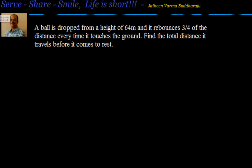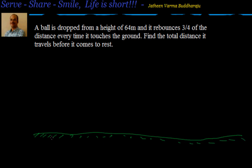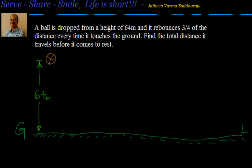Let me draw a diagram. Let's say this is the ground — a plain ground, no controversy there. A ball is dropped from a height of 64 meters, so the height from the ball to the ground is 64 meters. It rebounds 3/4 of the distance every time it touches the ground.